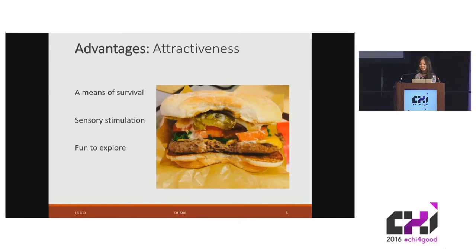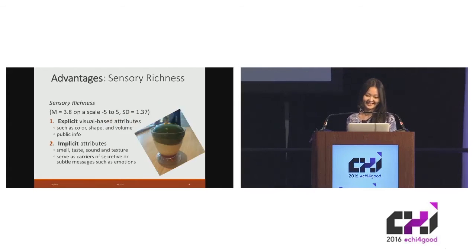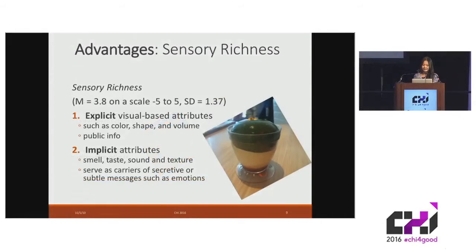From participants' feedback, we summarize six advantages of data edibilization. First, food is naturally attractive to humans as a means of survival. It can stimulate people's desire to explore, especially when the food is aesthetically pleasing or when the audience is hungry. Second, edibilization can leverage explicit attributes like color, shape, and volume, as well as implicit attributes such as smell, taste, sound, and texture, and can serve as carriers for secretive or subtle messages.